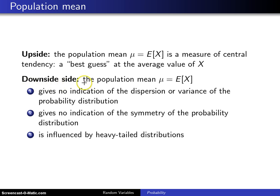Here are three downsides to the population mean, which is the expected value of x. First, the expected value of x gives you no indication of how dispersed, variable, or spread out the probability distribution is. It doesn't tell you if the distribution is clustered around the expected value or if there's a big spread. We will introduce another expected value known as the variance, which will measure that spread, but the mean alone does not give you that.